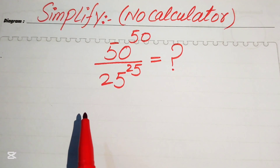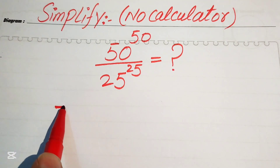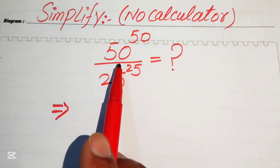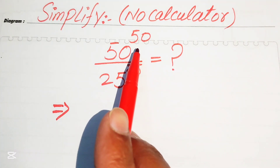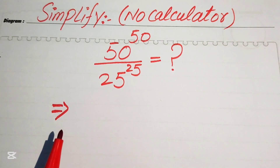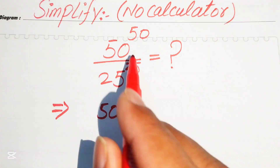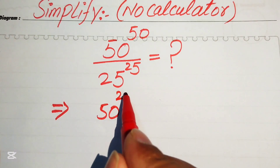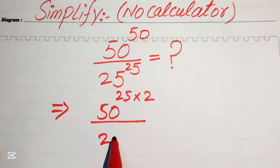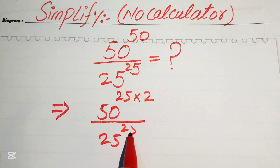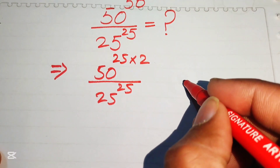The very first step is to focus on the base and exponent of this term. The exponent is 50, and we write this 50 as 25 times 2. So we have 50 to the power of (25 times 2), divided by 25 to the power of 25.